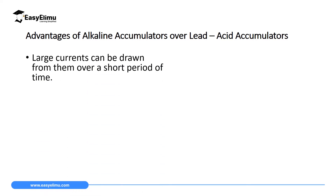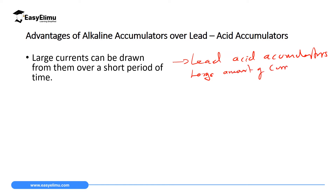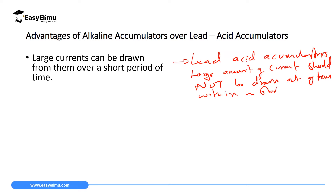The first advantage is that a large amount of current can be drawn from alkaline accumulators over a very short time. This is contrary to lead acid accumulators, from which a large amount of current should not be drawn within a short time. With alkaline accumulators you can draw large current within a very short time and the accumulator will function normally.